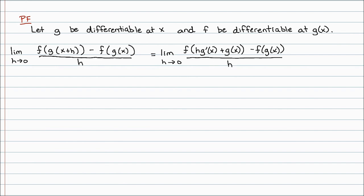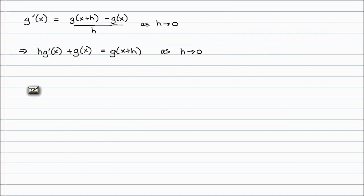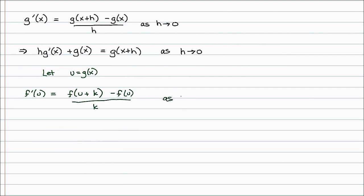If f is differentiable at g, we'll let u equal g evaluated at x. Since f is differentiable at that value, f prime at u by the limit definition is just equal to f of u plus k minus f of u, all over k, as k approaches 0. I have to use k because h is already being used in the function g. So f prime at u — which is g of x — is just defined to be the limit as k approaches 0 of f of u plus k minus f of u over k.